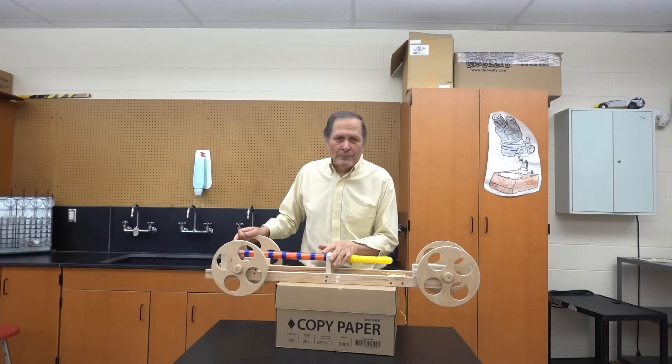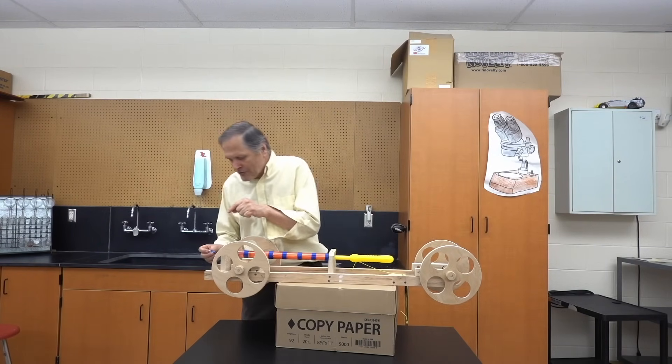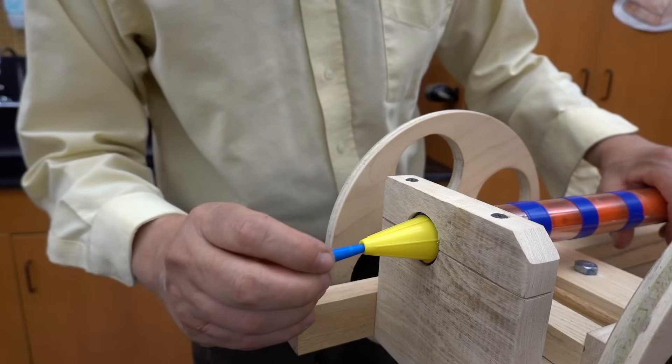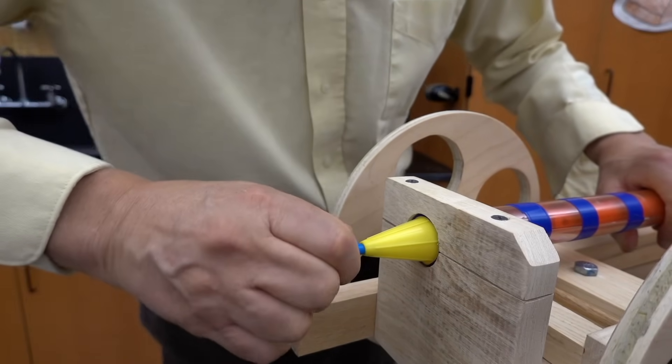All right, I think I'm ready to run some trials. Now, the first thing I need to do is seal the front end of this tube. To do that, I put in this little plastic plug and hopefully get a good seal.